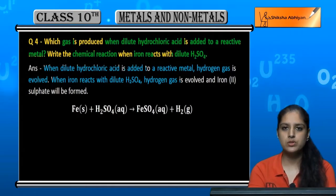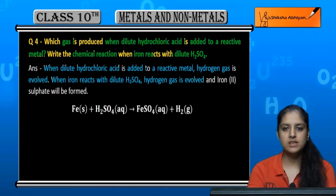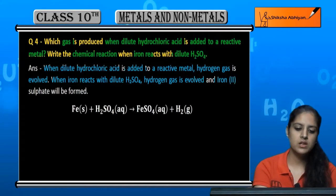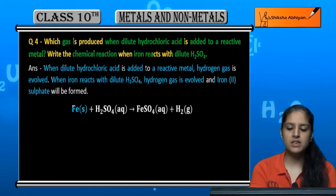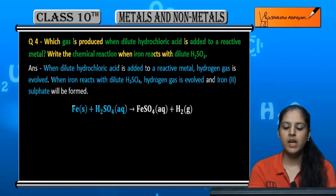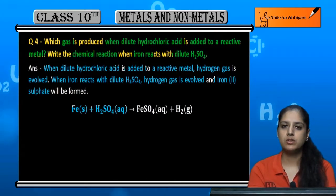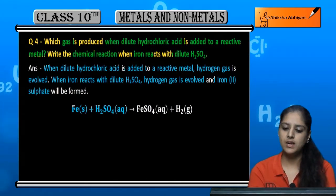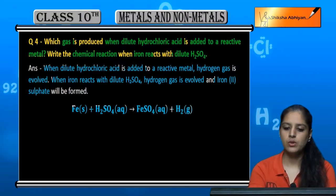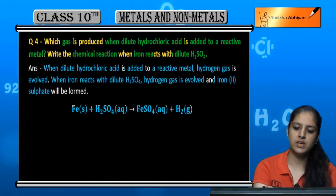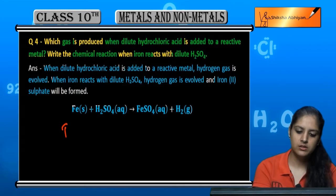When iron reacts with dilute H₂SO₄, the products are iron sulfate (FeSO₄) and hydrogen gas (H₂). So: Fe + H₂SO₄ (dilute) → FeSO₄ + H₂.